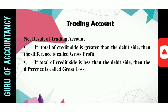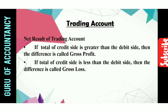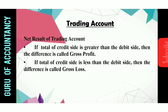The net result of the trading account: if the total credit side is greater than the debit side, the difference is called gross profit. If the total credit side is less than the debit side, the difference is called gross loss. Either gross profit or gross loss is possible — both cannot occur simultaneously. Whatever result you get will be transferred to the profit and loss account.